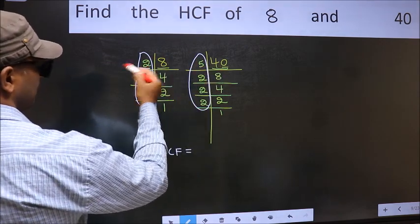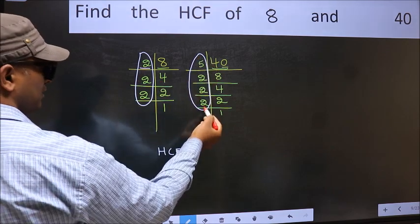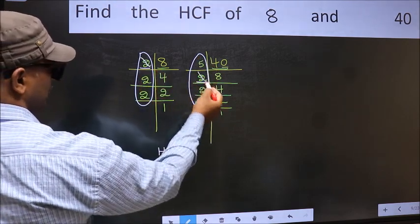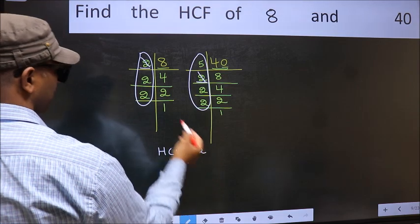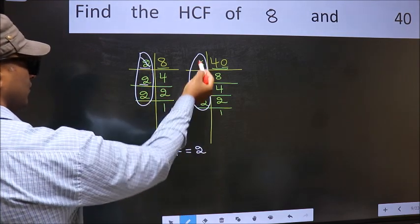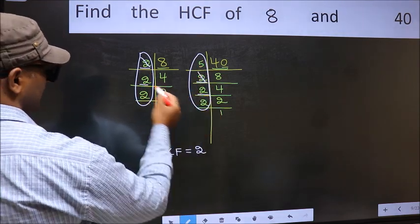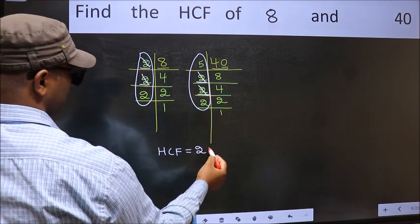Starting with the number 2. Do we have 2 here? Yes. So cut 2 right here. Next number 2. Do we have 2 here? Yes. So cut 2 right here.